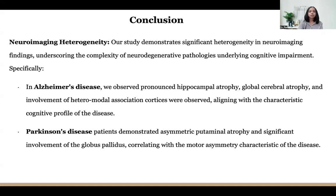Conclusion. The study demonstrates significant heterogeneity in neuroimaging findings, underscoring the complexity of neurodegenerative pathologies and the underlying cognitive impairment. In Alzheimer's, we observed pronounced hippocampal atrophy, global cerebral atrophy and involvement of heteromodal association cortices, aligning with the characteristic cognitive profile of the disease.